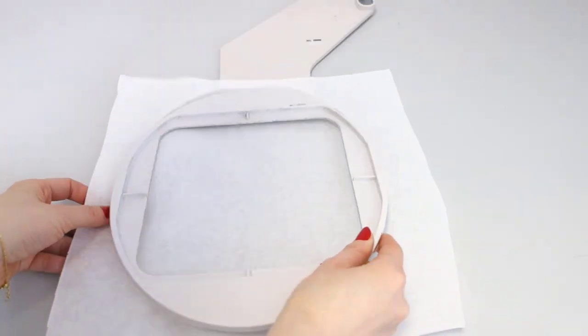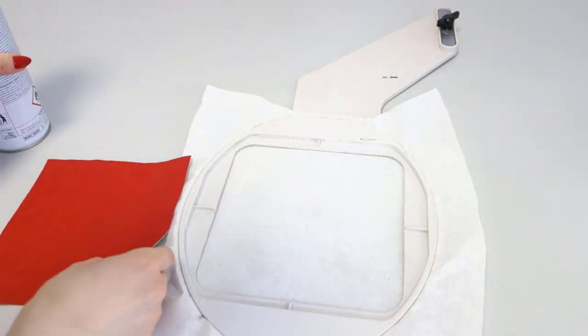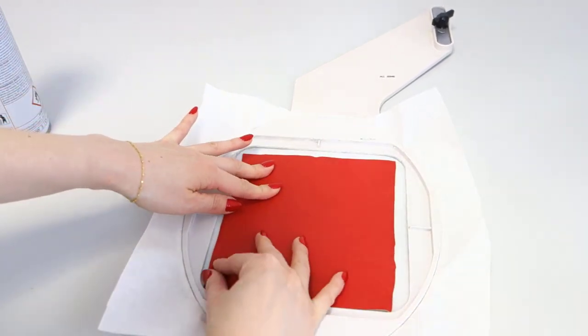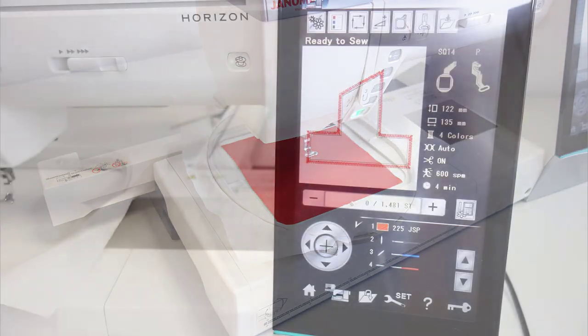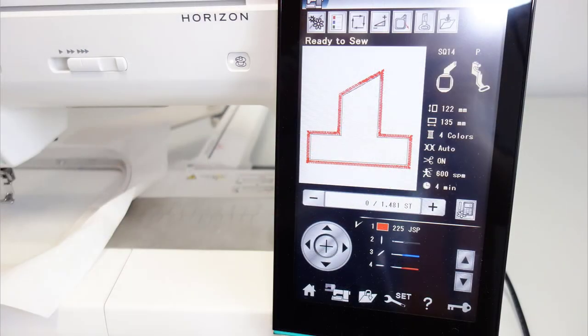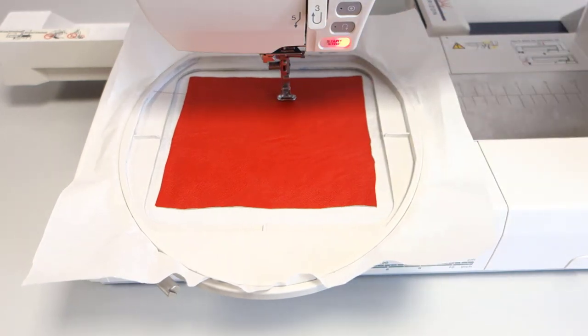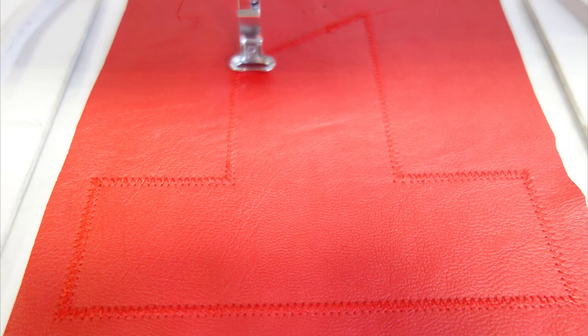Use adhesive spray to hold the applique fabric onto the stabilizer and smooth out any bubbles. Set the hoop to the machine. Load the cutwork file. Start the machine. The first step is the zigzag outline. This will hold the fabric firmly in place for the cutting.